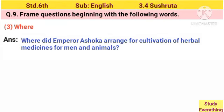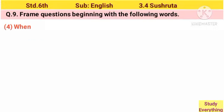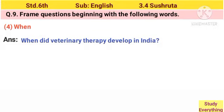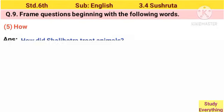3. Where? Answer: Where did Emperor Ashoka arrange for cultivation of herbal medicine for men and animals? 4. When? Answer: When did veterinary therapy develop in India? 5. How? Answer: How did Shalyotra treat animals?